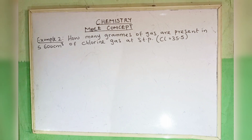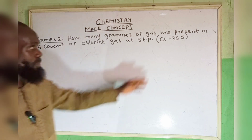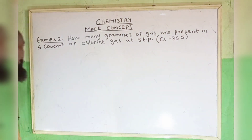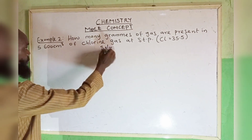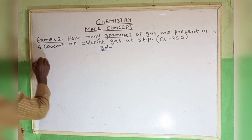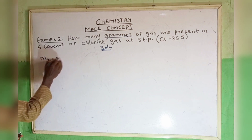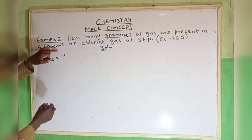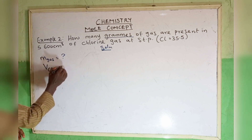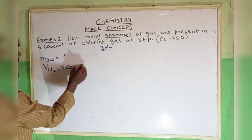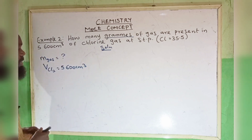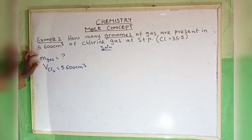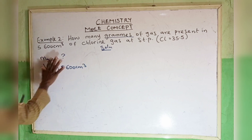Example two: calculate how many grams of gas are present in 5600 cm³ of chlorine gas at STP, given that the atomic mass of chlorine is 35.5. When we say grams, we are talking about mass. Mass of gas is unknown. Volume of chlorine is 5600 cm³.